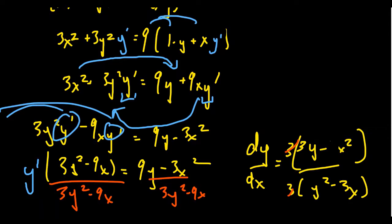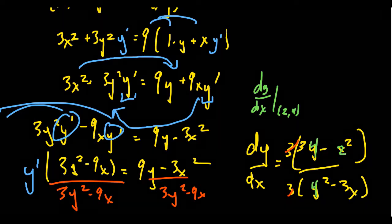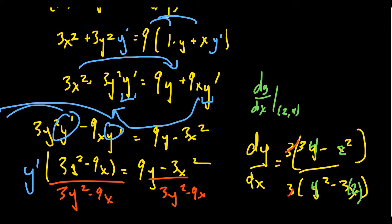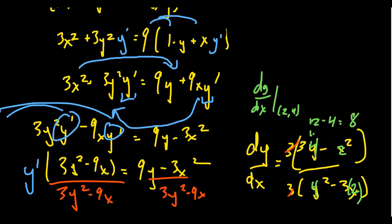What we need is the derivative when x equals 2 and y equals 4. Plugging in: numerator is 3 times 4 minus 2 squared, which is 12 minus 4, giving 8. Denominator is 4 squared minus 3 times 2, which is 16 minus 6, giving 10. So we end up with 8 tenths, or 4 fifths. That gives us the slope of the tangent line.